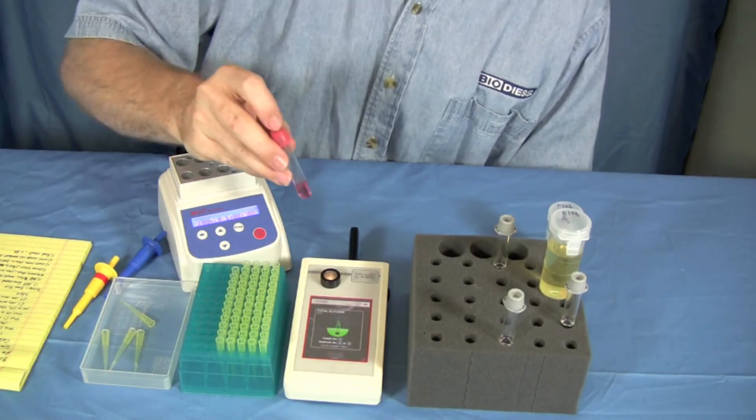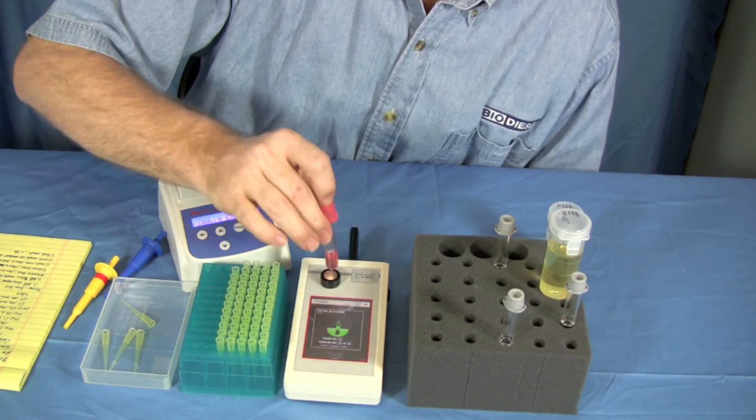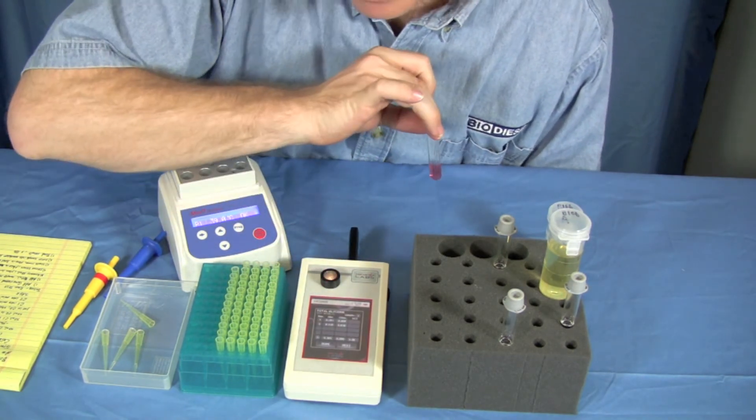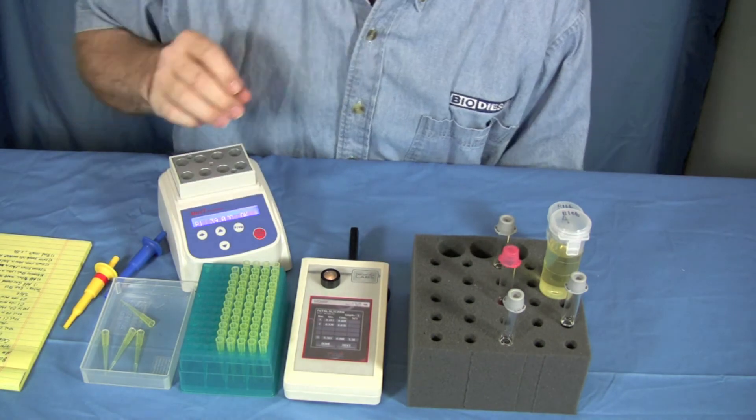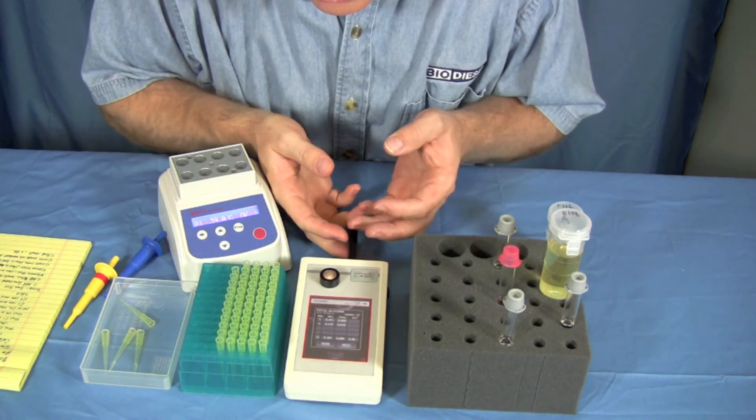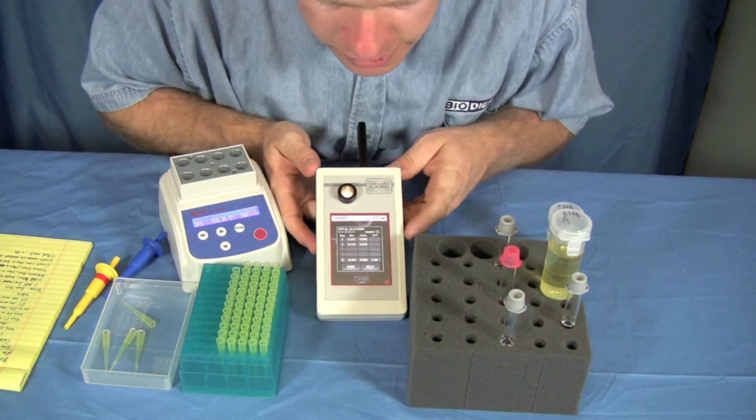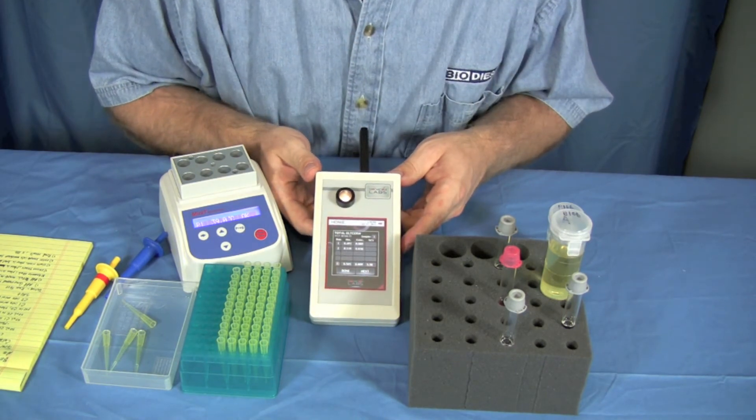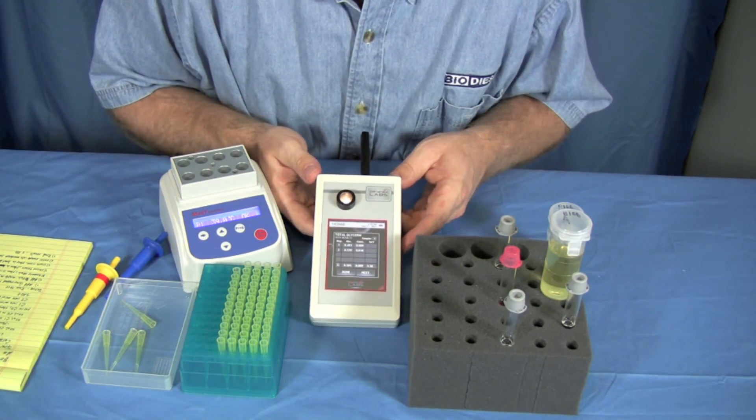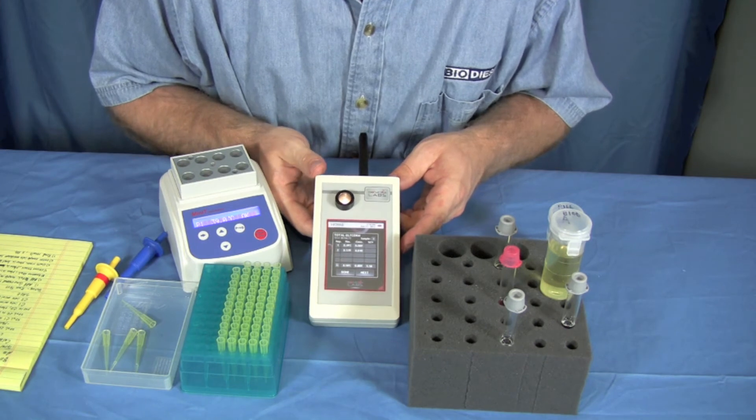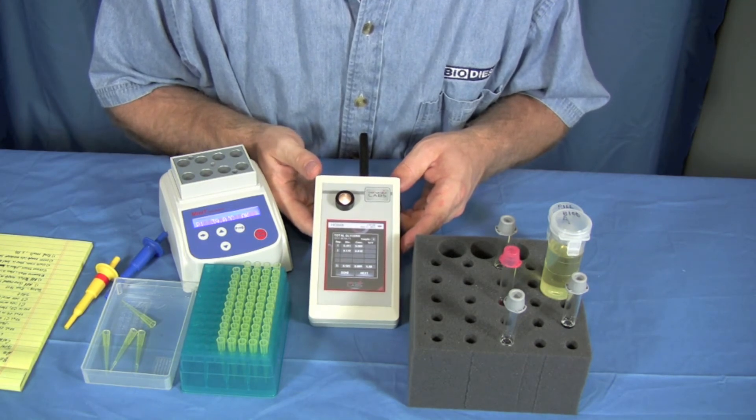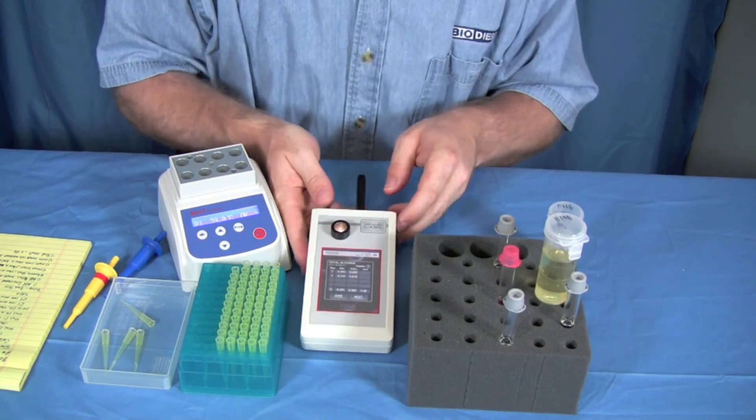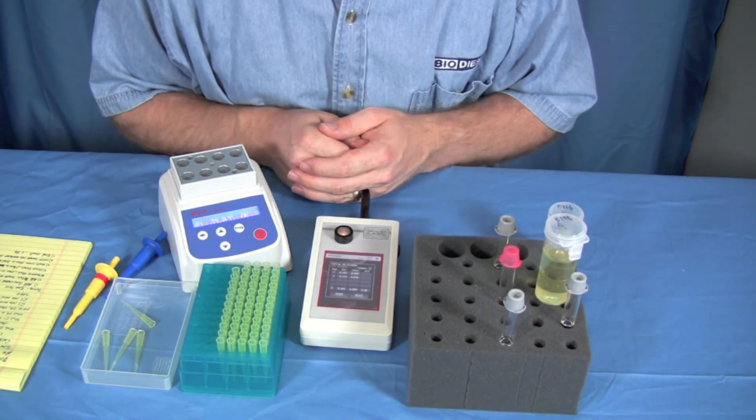Okay, so in we go. This fuel tested really, really good. This is 0.009 or 0.09% total glycerin, which means this fuel would meet ASTM standard. Which is awesome. We've got really good fuel here. And that's how you do a total glycerin test.